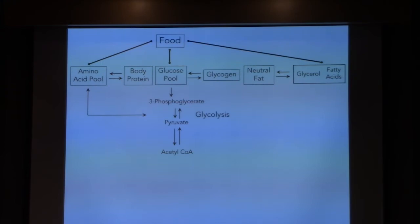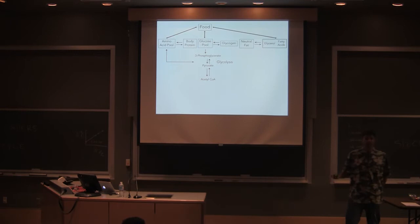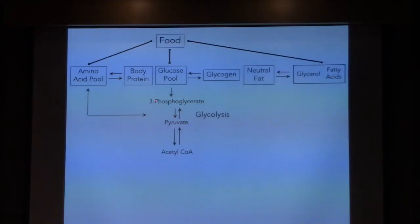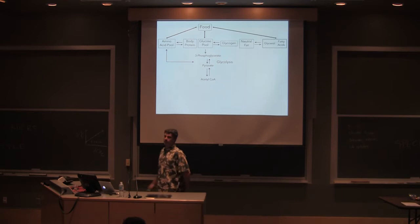One of the major things we do with the glucose pool is glycolysis. You guys have heard this term before. Plants do this, animals do this, microbes do this. This is a major metabolic pathway in just about every organism on Earth. There's a lot of intermediary steps there.